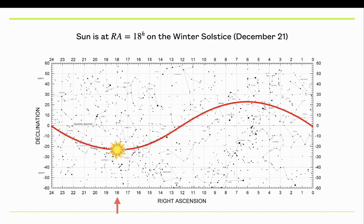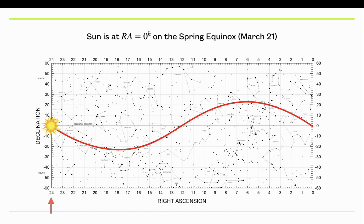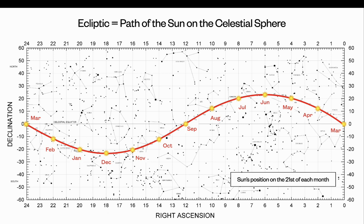Back to the spring equinox, a right ascension of 24 hours is the same as zero — this thing wraps around with periodic boundary conditions. So here are all the months of the year mapped out. You start at March where the Sun is at 0 hours right ascension, then count through the months: March, April, May, June, all the way to December, then January, February, back to March. The Sun's position is shown at the 21st of each month since that's when the solstices and equinoxes occur.